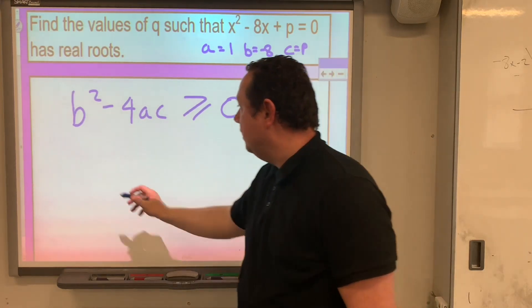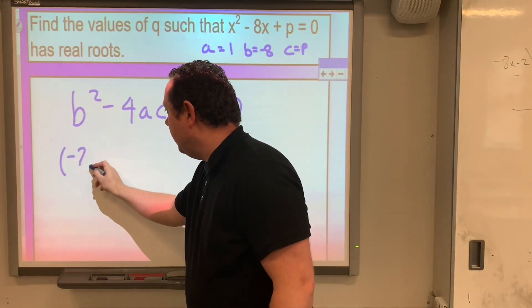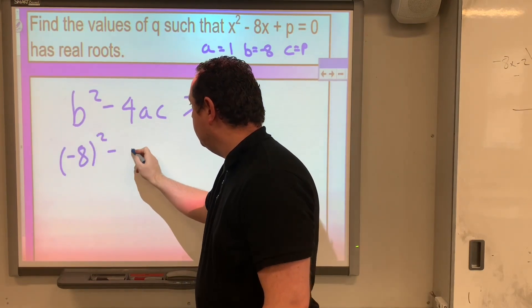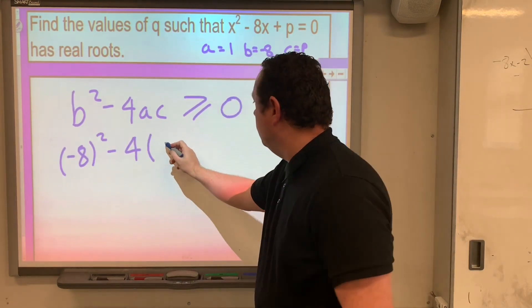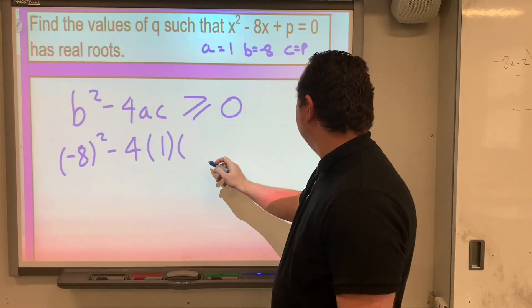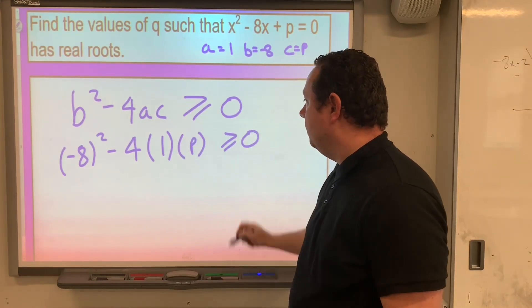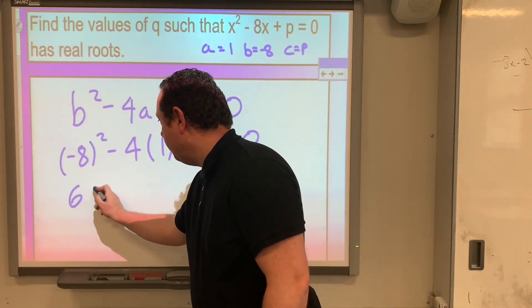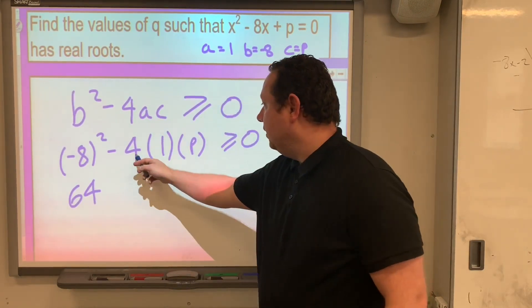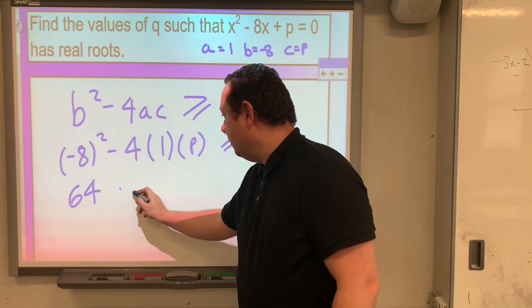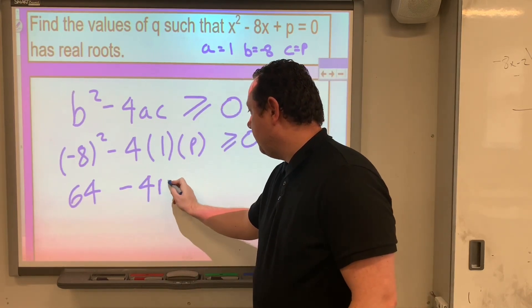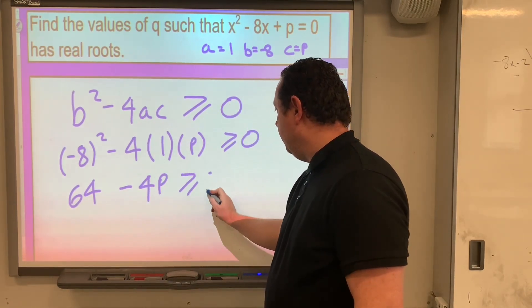So substituting those values in, we get minus 8 squared minus 4 times 1 times p. So that must be greater than or equal to zero. Minus 8 squared is 64, minus 4 times 1 times p is minus 4p. That must be greater than or equal to zero.